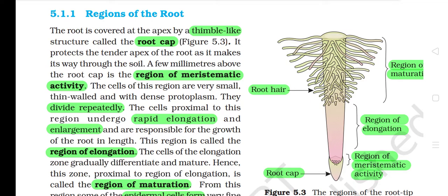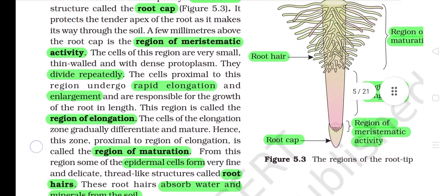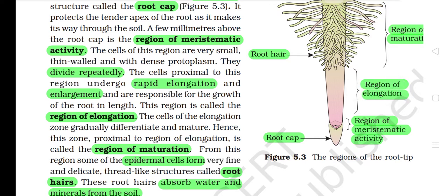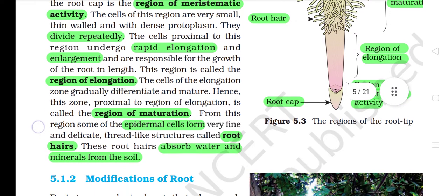This region is called the region of elongation. The cells of the elongation zone gradually differentiate and mature. Hence, this zone proximal to the region of elongation is called the region of maturation. From this region, some of the epidermal cells form very fine and delicate thread-like structures called root hairs. These root hairs absorb water and minerals from the soil.